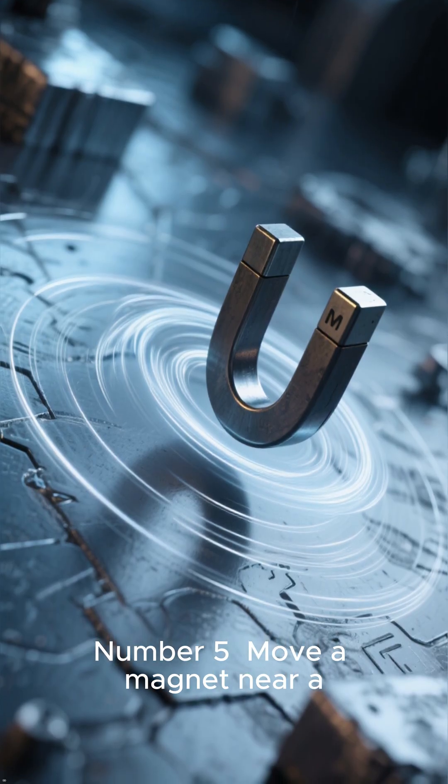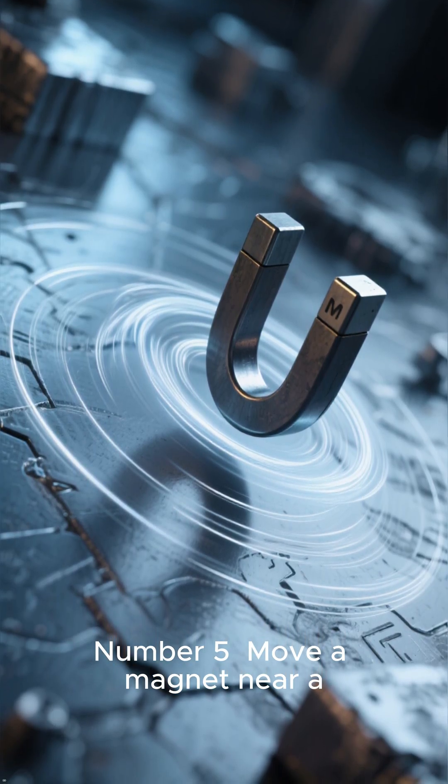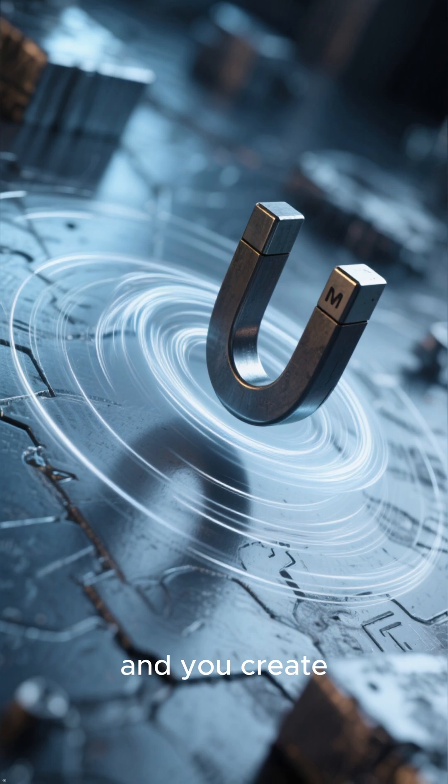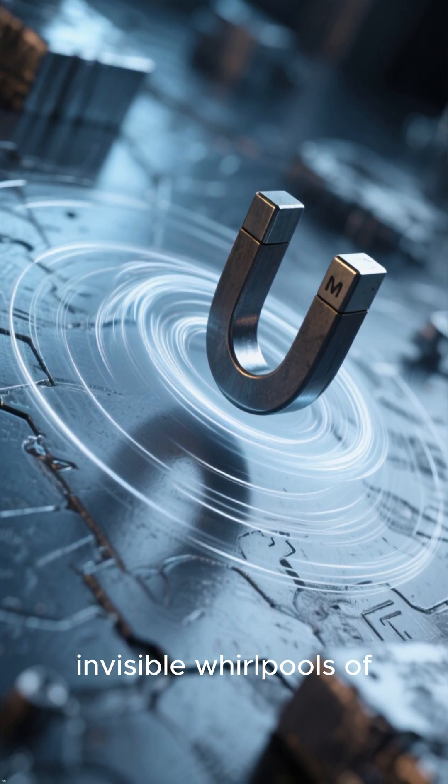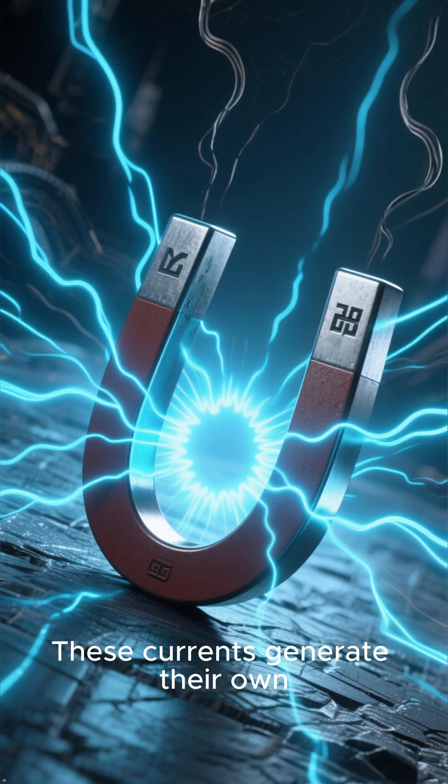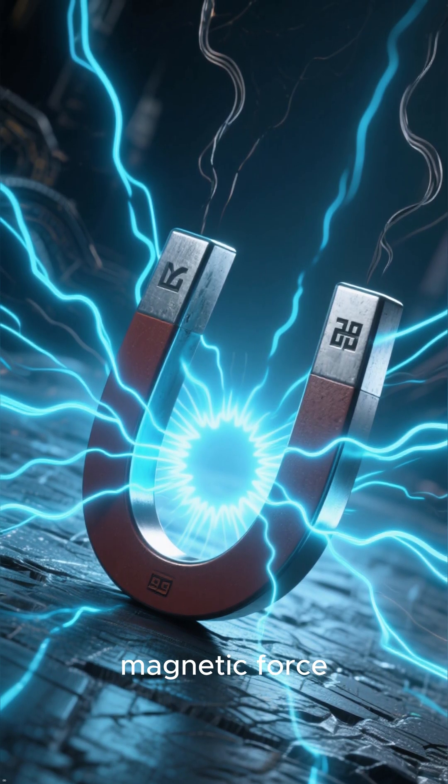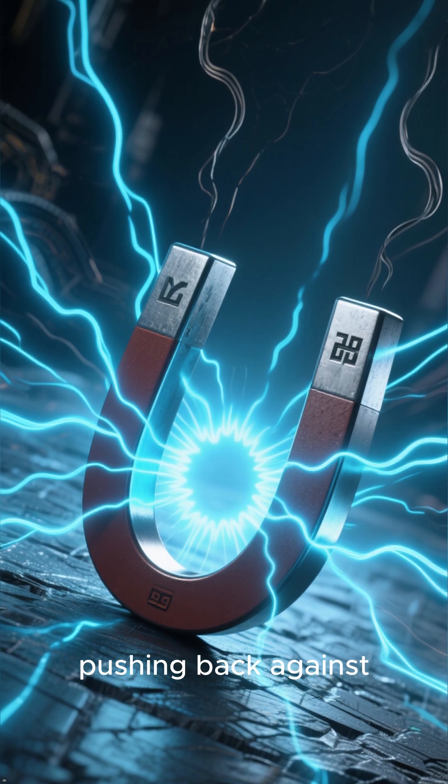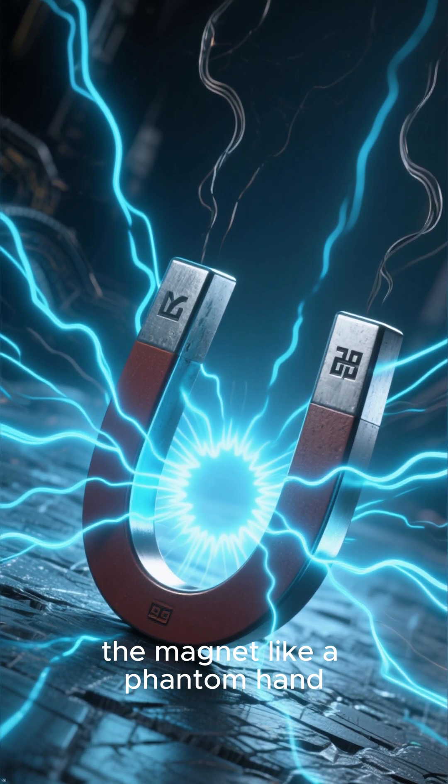Number 5: Move a magnet near a piece of metal and you create invisible whirlpools of electricity inside it. These currents generate their own magnetic force, pushing back against the magnet like a phantom hand.